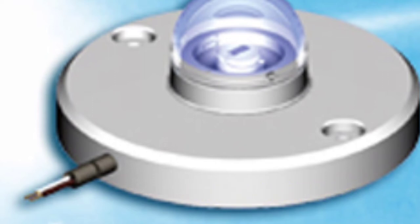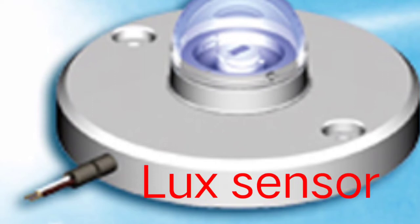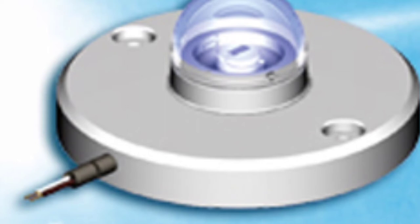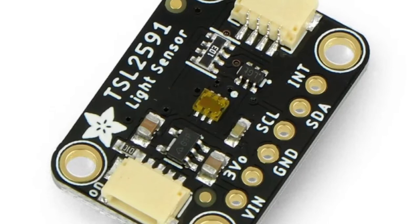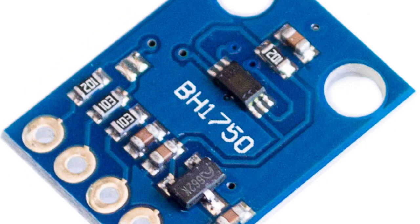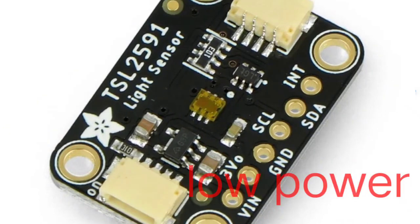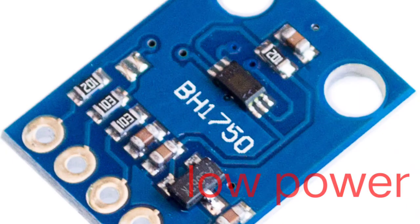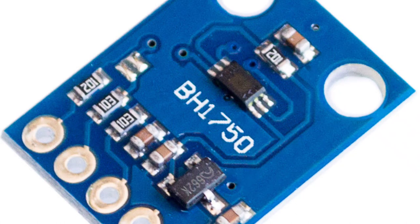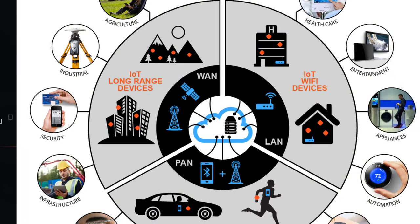Now we come to Lux sensors. Lux sensors measure the luminosity and can be used to trigger various functions, ranging from cross-validating movement to turning the light on if it becomes too dark. Some of the most popular light sensors are TSL2591 and BH1750. Recent tests of TSL2591 and BH1750 in low-powered IoT devices have found them to be working fairly well for most use cases, since most IoT devices are battery operated and should have minimum power consumption for longer duration.